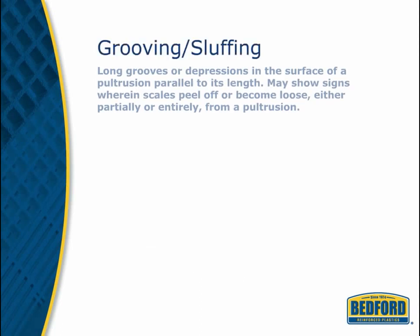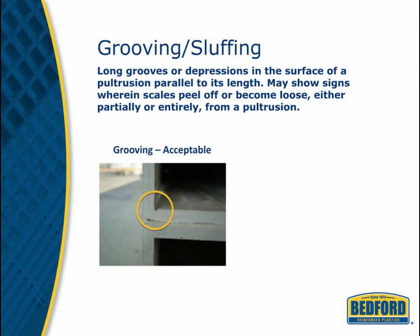Grooving and sloughing are long grooves or depressions in the surface of a pultrusion running parallel to its length. This can happen because of a change in tension on the fiberglass roving or buildup in the die. Grooving is acceptable as long as it is not over 15% of the nominal wall thickness, no sharp edge is created, and dimensional tolerances are met.